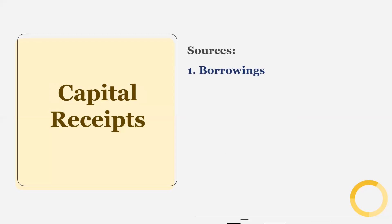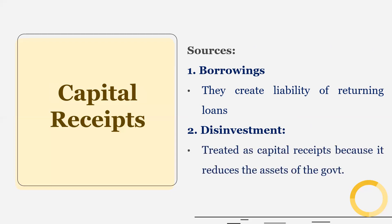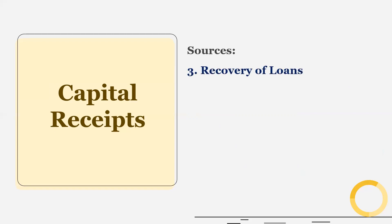What are the sources of capital receipts? First is borrowings — borrowings create the liability of returning loans, and therefore they are under the category of capital receipts. Second is disinvestment, which is a non-debt capital receipts source; disinvestment is treated as capital receipts because it reduces the assets of the government. Third is recovery of loans, also a non-debt capital receipt, which similarly reduces the assets of the government and is therefore under the category of capital receipts.